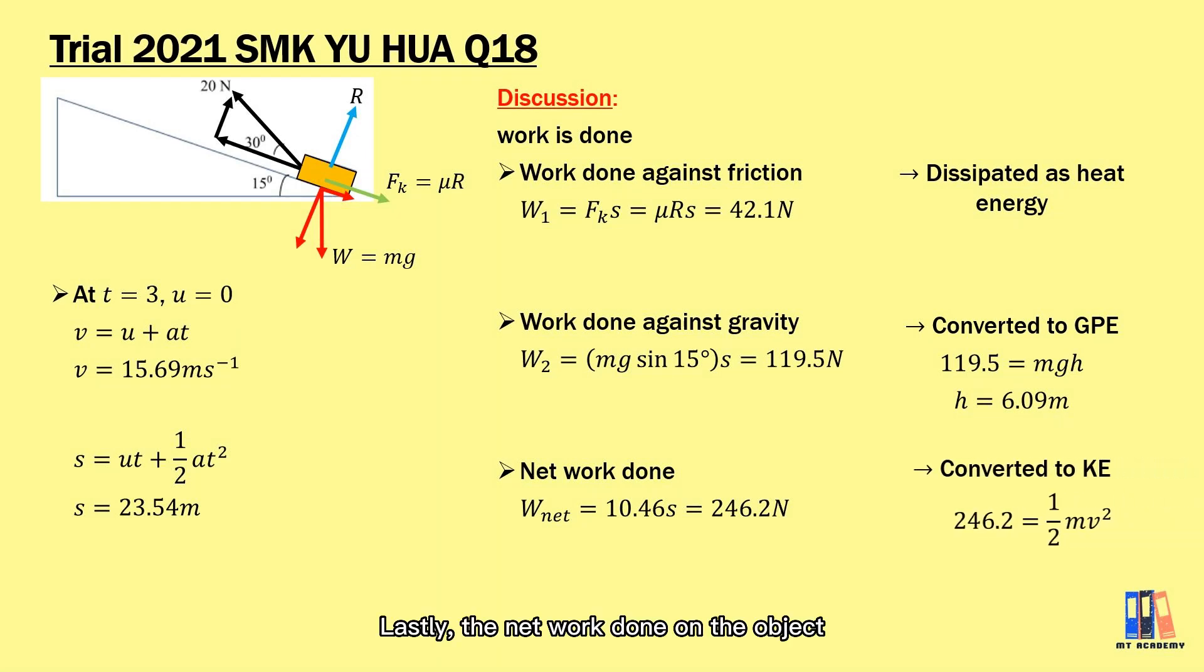Lastly, the net work done on the object will be reflected into the increase in kinetic energy. The object is at rest initially. We have the equation W = ½mv² and we can obtain the final velocity at the time of 3 seconds is 15.69 meter per second which is aligned with the answer obtained just now.